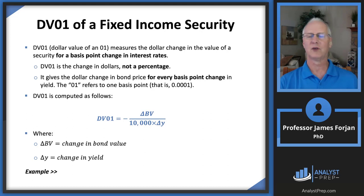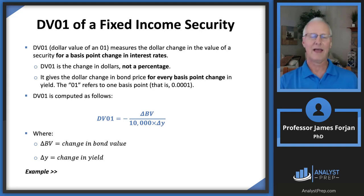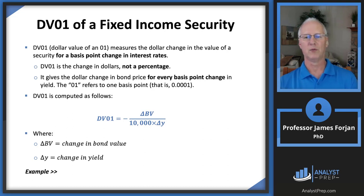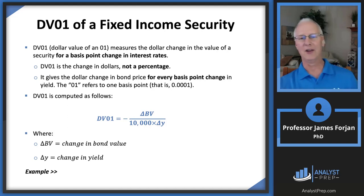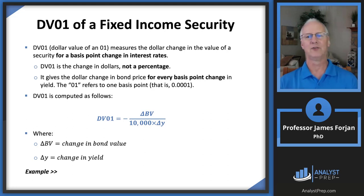A basis point change is really the smallest fraction of change that is measurable. The '01' in DV01 refers to one basis point — that is 0.0001. Here's a silly mnemonic: if you're confused about what a basis point is in decimal form, take 007 (like James Bond), add another zero, and change the seven to a one.